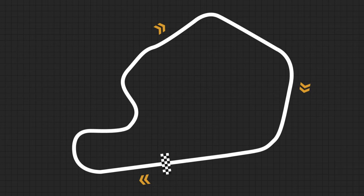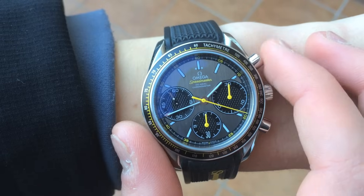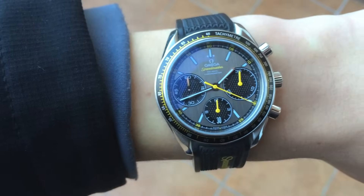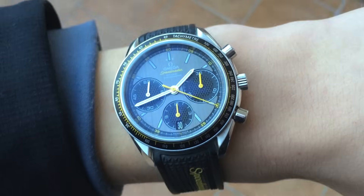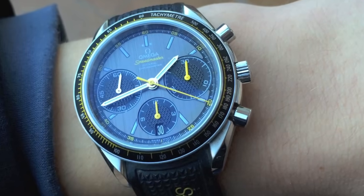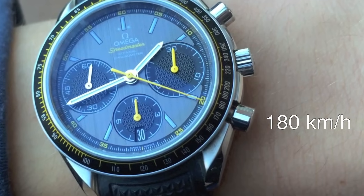Moving on to some examples. Let's say you are watching a racing event and you want to determine the speed of a car. In the race magazine, you read that the distance between curve A and curve B is exactly 1 km. Using your chronograph, you notice it takes the race car 20 seconds to cover this distance. The tachymeter scale reads 180, meaning the average speed of the car was 180 km per hour.